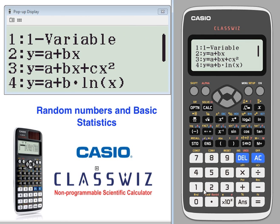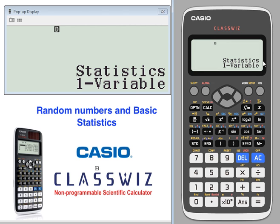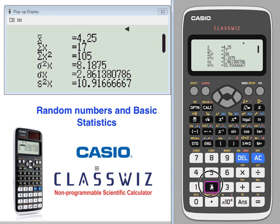We're going to do one variable statistics. We'll use a basic data set. AC will let you know that you're in one variable statistics. Press Option number 2 to calculate.